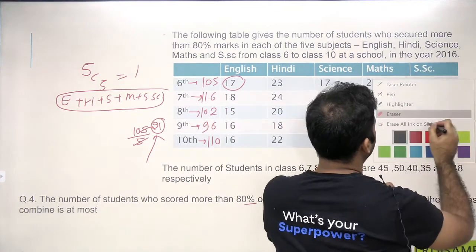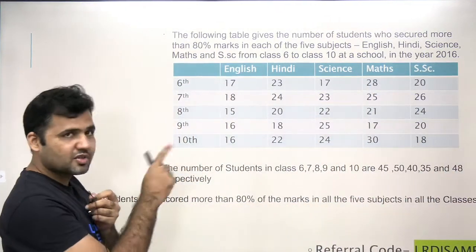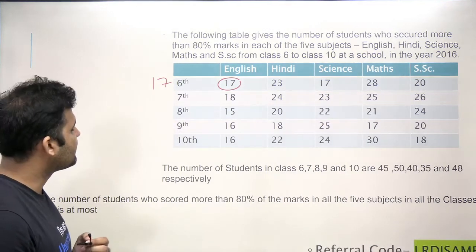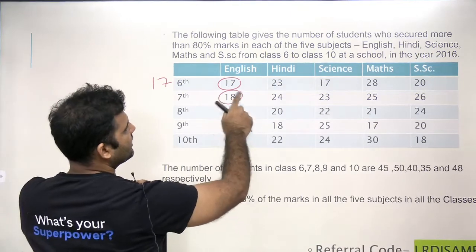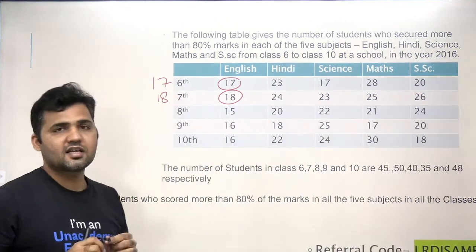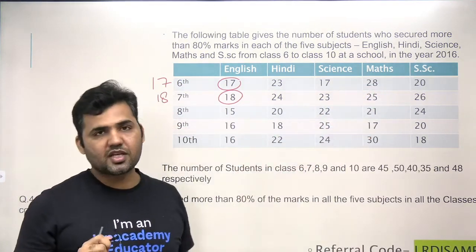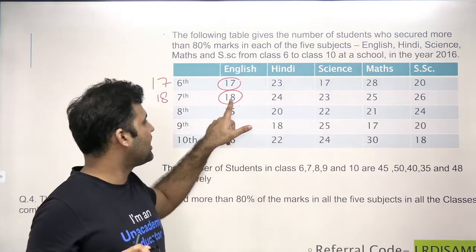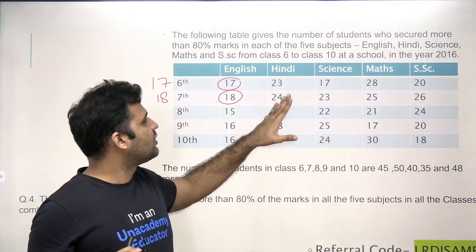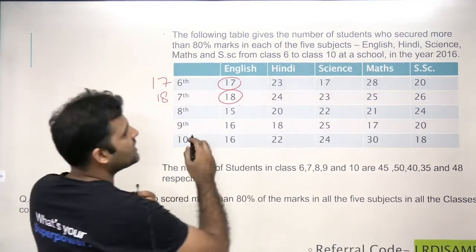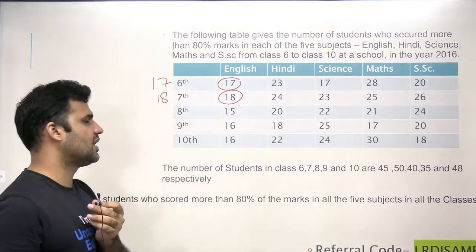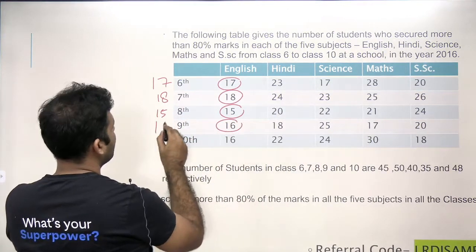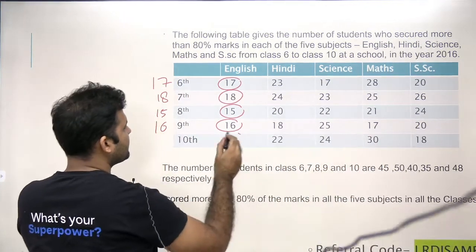Since the lowest possible value is 17, in 6th class we must take a maximum of 17 students. For 7th class, the minimum among all five subjects is 18, so at most 18 students can have more than 80% in all five subjects. For 8th class, the minimum possible value is 15, so we take 15. For 9th class, the minimum possible value is 16, so we take 16. For 10th class, the minimum possible value is also 16, so we take 16 there as well.